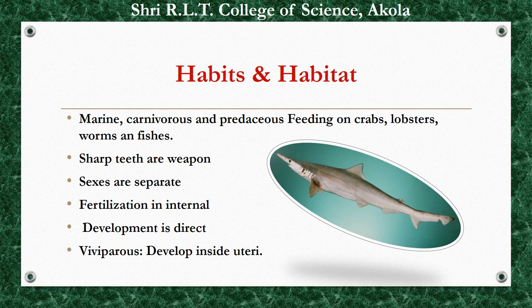Habits and Habitat of Scoliodon: Like most sharks, Scoliodon is also a marine animal, meaning it lives in seawater. Scoliodon is carnivorous — it feeds on other aquatic animals. It is predaceous and feeds mostly on crabs, lobster, worms, and fishes in the seawater.